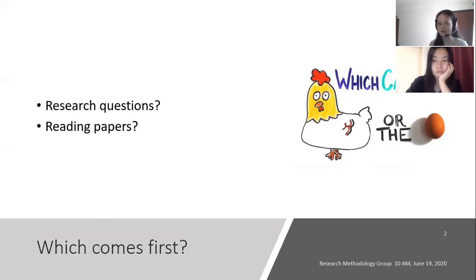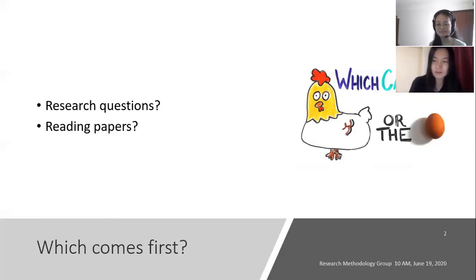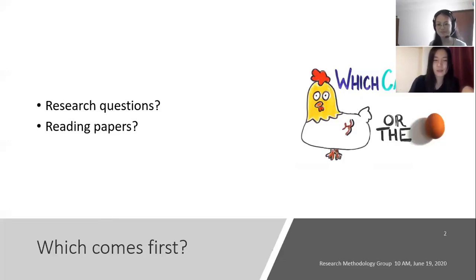So today we are going to learn how to use this system in our own research. First thing I want to ask: which one comes first to you — research questions or reading the paper first? I guess for me it can be both, but the most frequent one is research questions first. If I have research questions, I will go look for relevant papers. But also sometimes when I read papers, I get some ideas — here's a research question I can do.